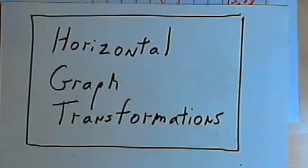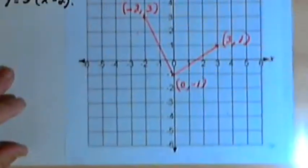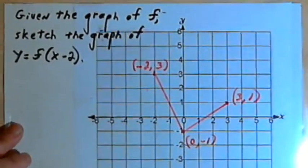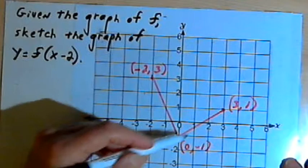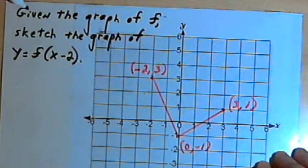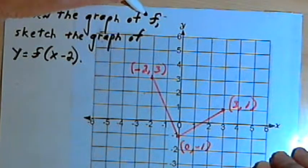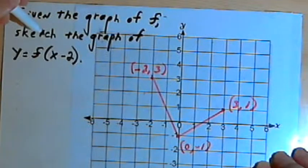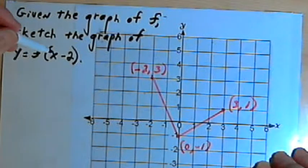This video is provided as supplementary material for courses taught at Howard Community College. In this video I'm going to talk about horizontal graph transformations. So let's say you've been given a graph of a function f and you have an assignment that says given the graph of f, sketch the graph of y equals f of x minus 2.